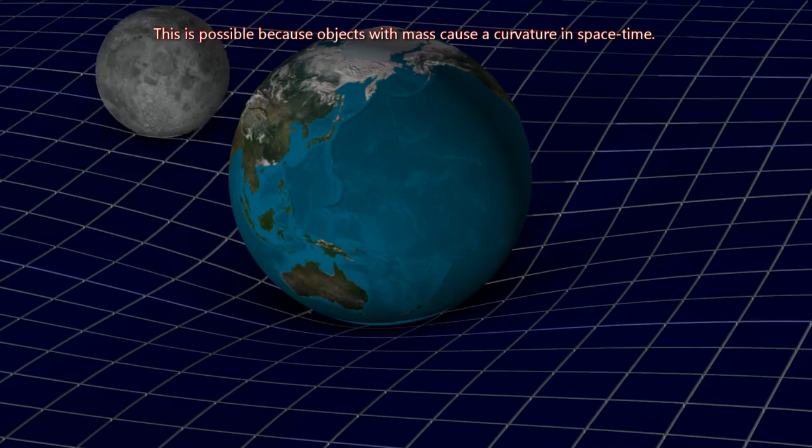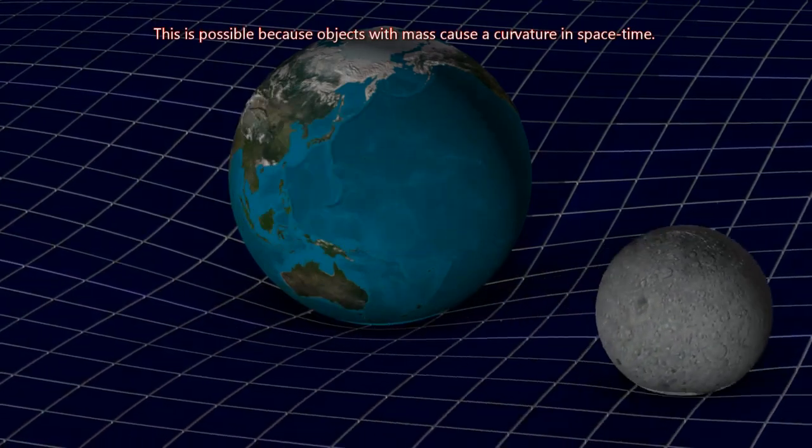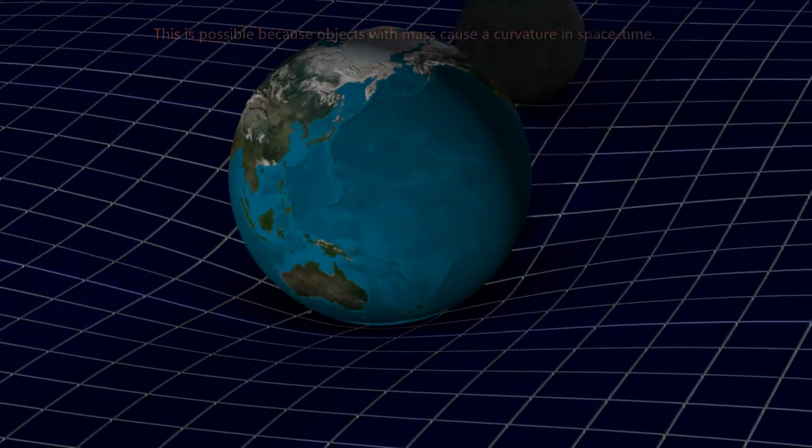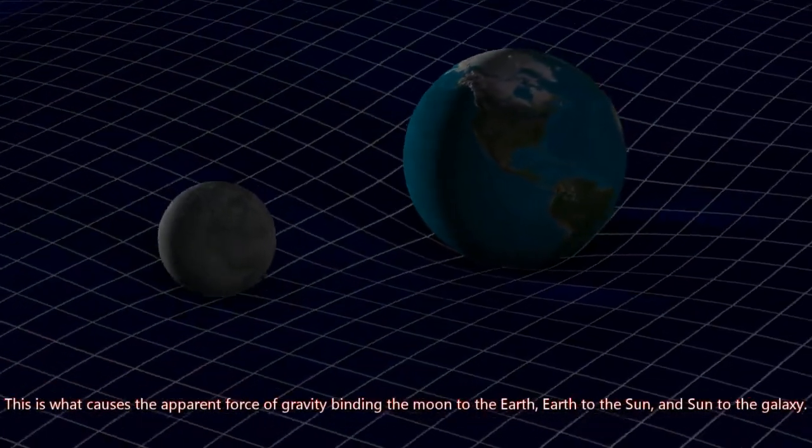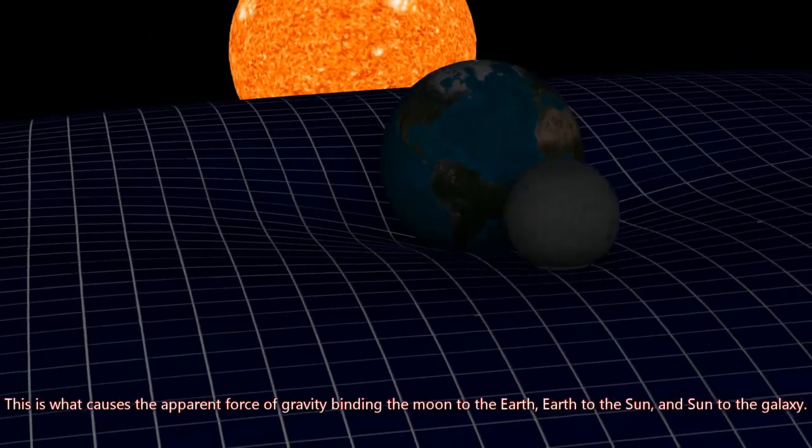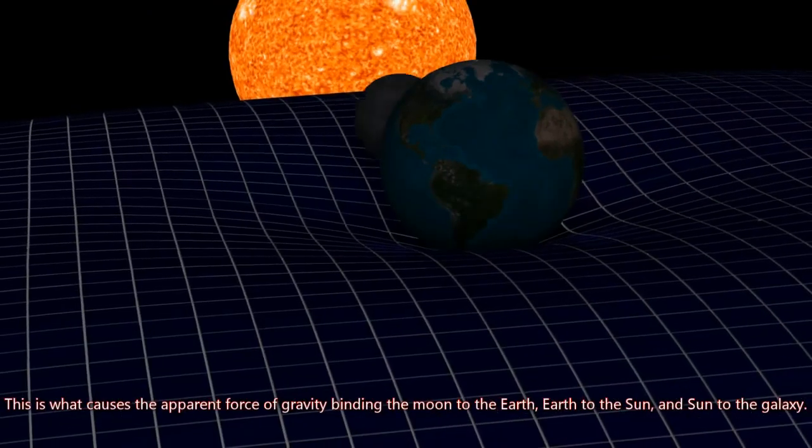This is possible because objects with mass cause a curvature in space-time. This is what causes the apparent force of gravity binding the Moon to the Earth, Earth to the Sun, and Sun to the Galaxy.